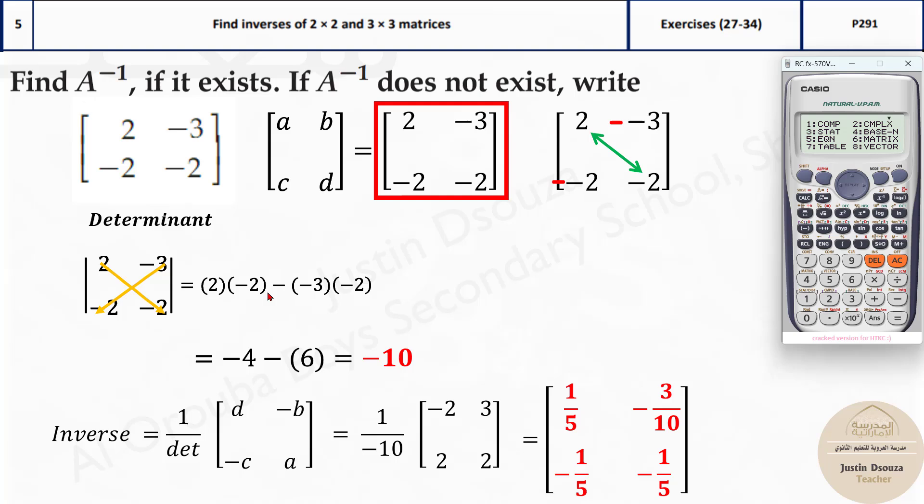Now, since I'm going to type this anew as the first matrix, I can go to mode again. Or I'll just clear the calculator. What I personally do is, whenever I finish matrices, I just clear the calculator. Go to mode again. Press 6. Now, matrix 1. It's a 2 cross 2 matrix. Option 5.